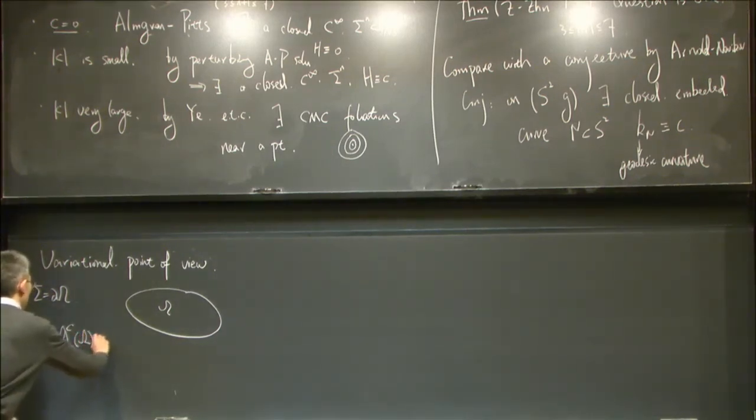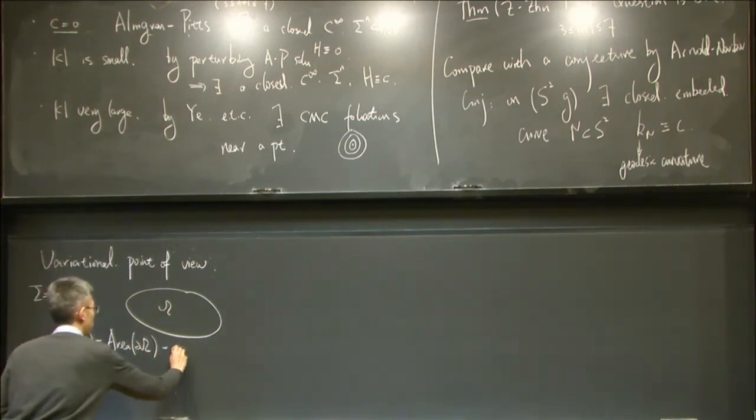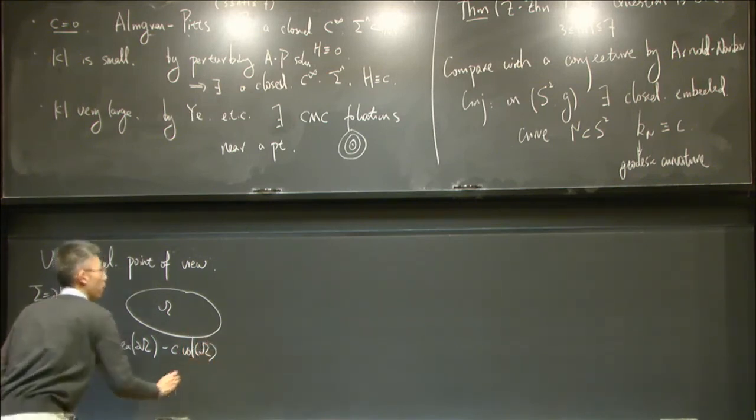That's defined as the area of the boundary subtract the number C times the volume of this domain omega.